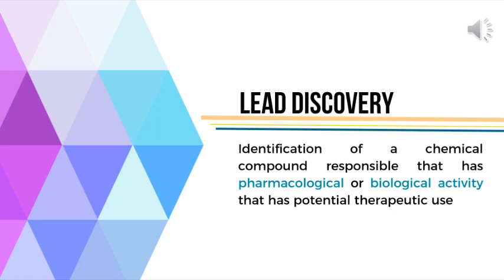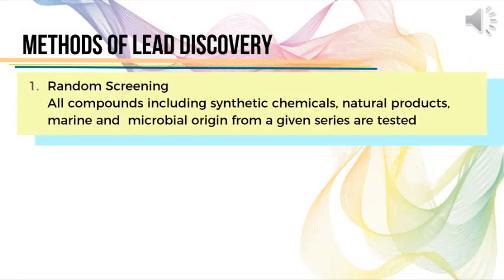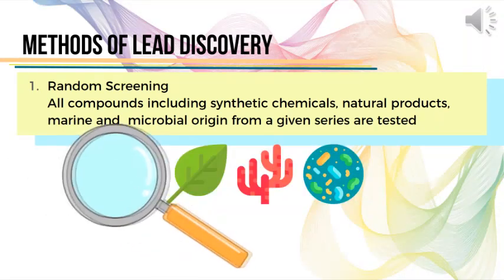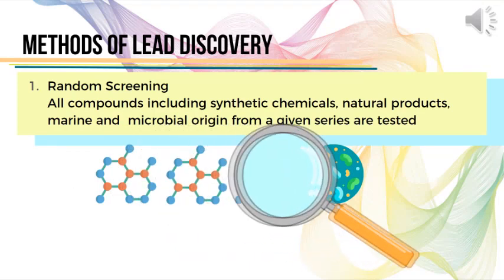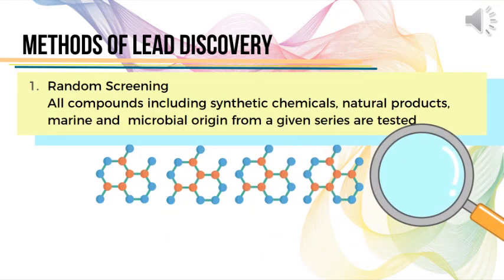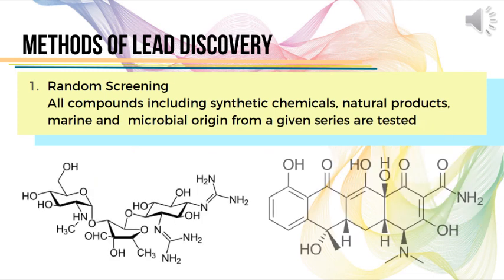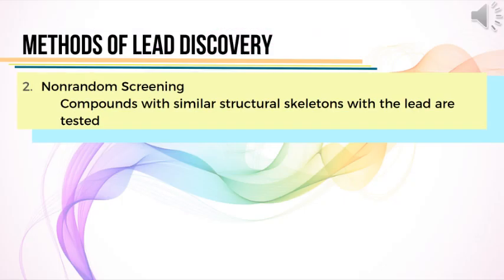One method is random screening. Random screening entails testing all compounds, including synthetic chemicals, natural products, and marine and microbial origin, in the hope of finding a promising lead. This, however, constitutes a large amount of cost and manpower, but this method can be used to discover drugs or leads with unexpected activities. Streptomycin and tetracycline were discovered this way.